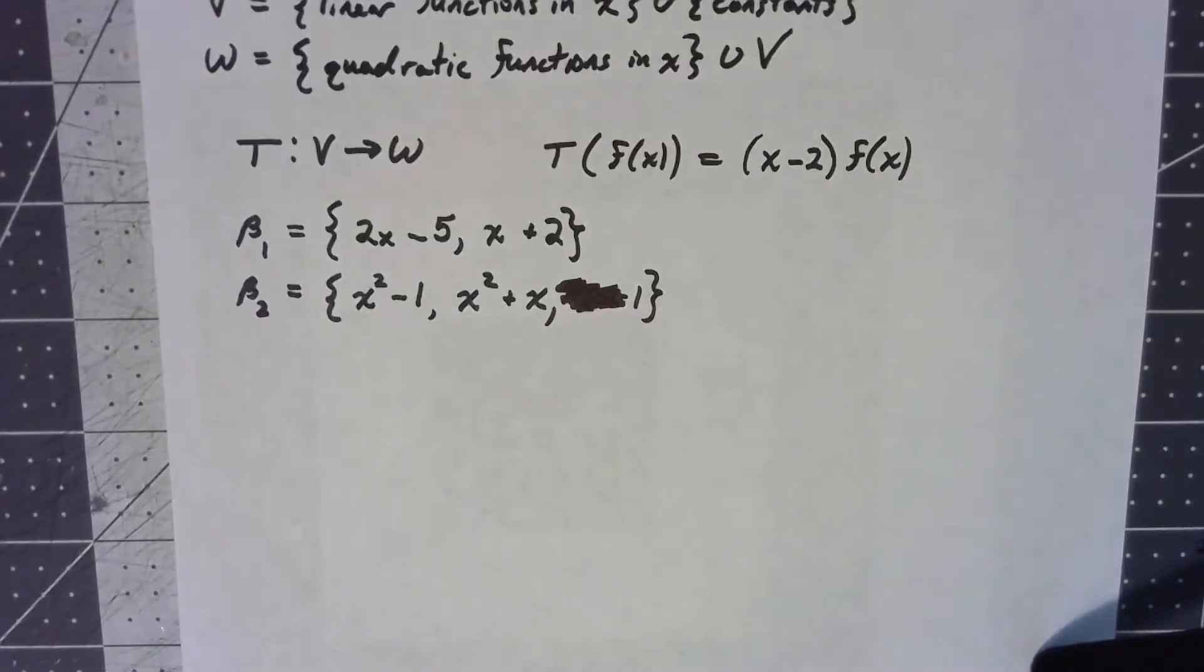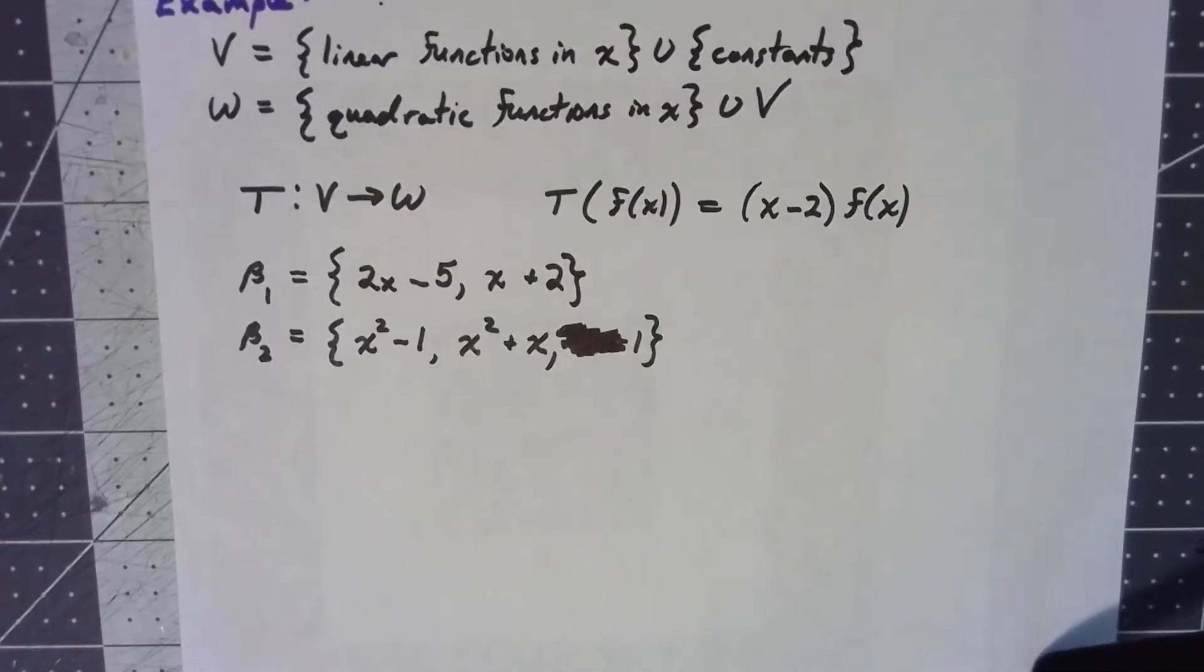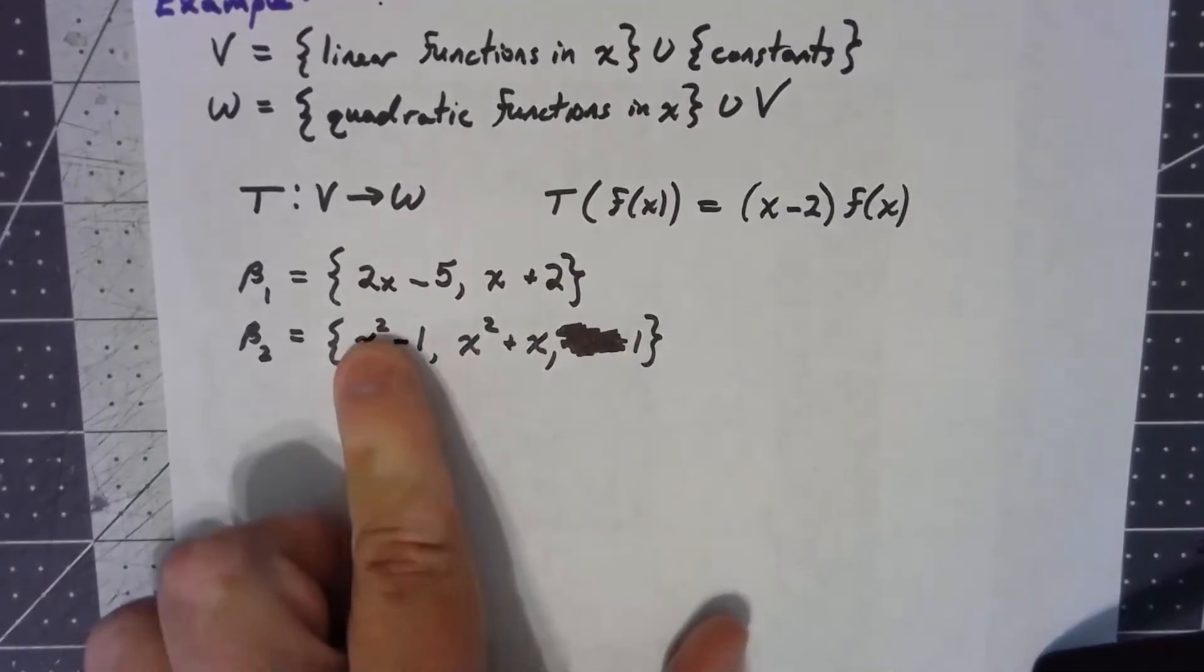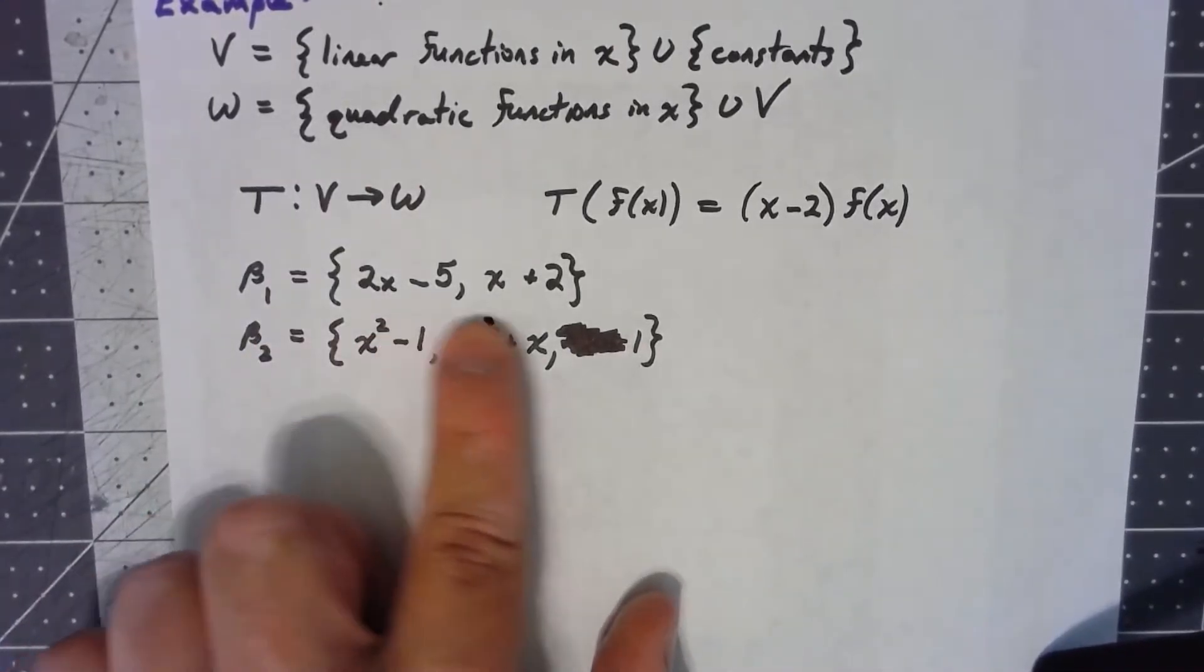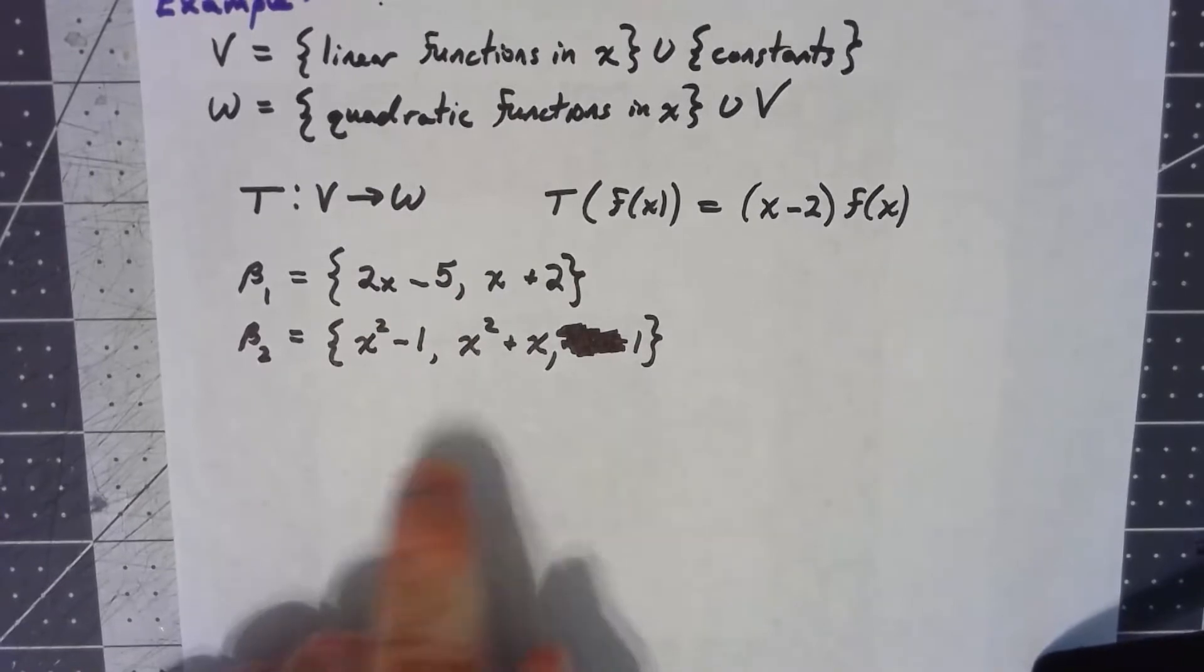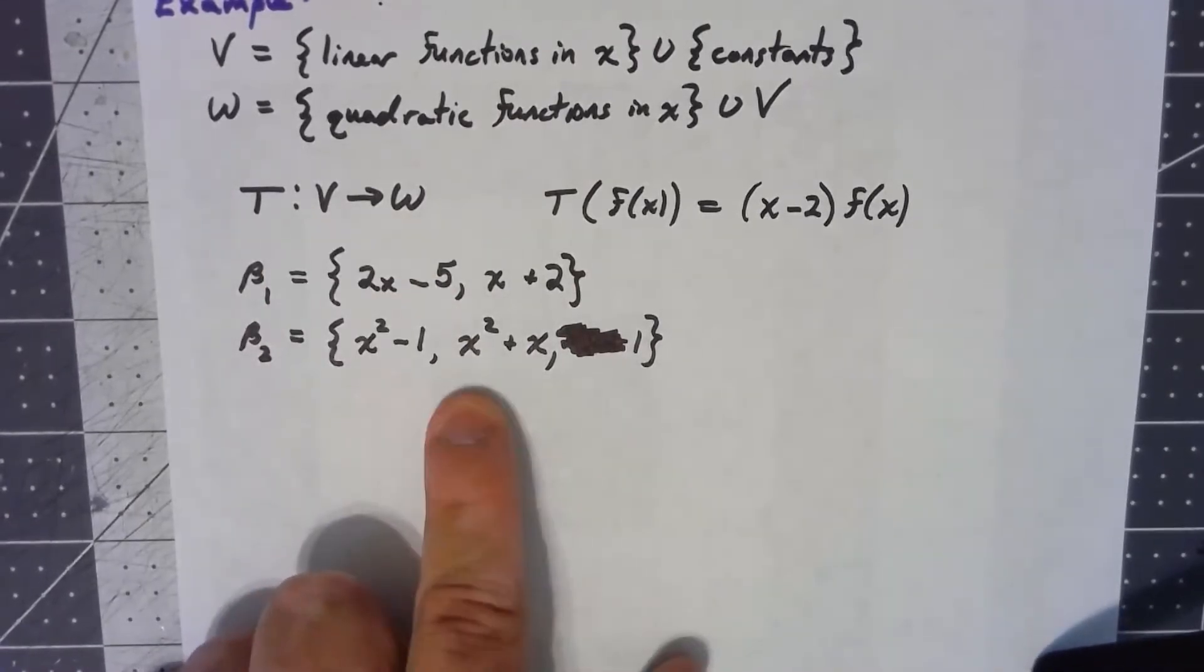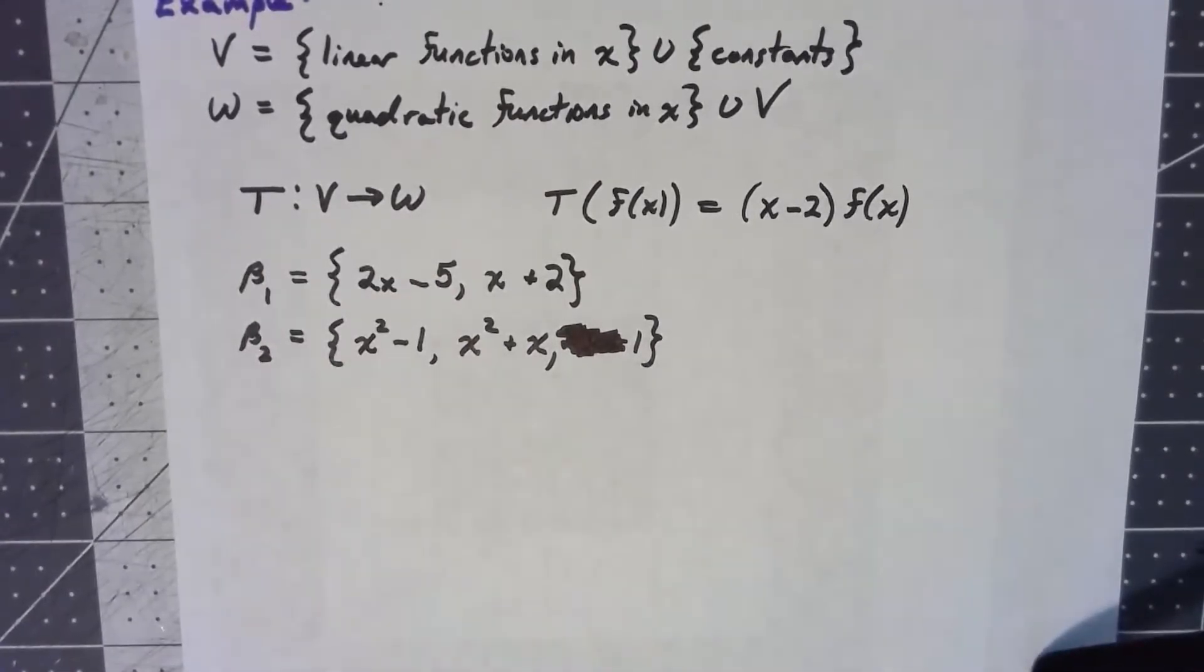To make this work, we have to have bases for both vector spaces. My basis for V, beta 1, is 2x minus 5 and x plus 2. My basis for W, beta 2, is x squared minus 1, x squared plus x, and 1.